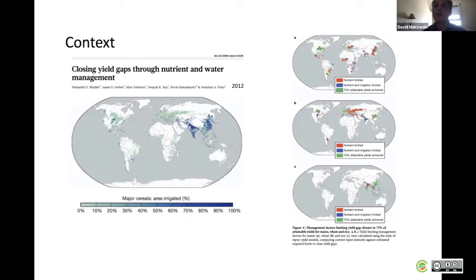The areas limited by both nutrients and irrigation are shown here in blue, for maize at the top, for wheat in the middle, and for rice at the bottom. You see that there are substantial areas in the world where the yield is limited by irrigation.